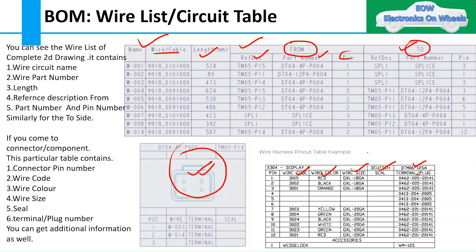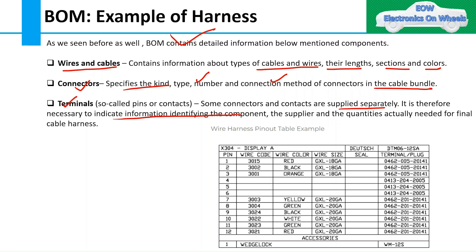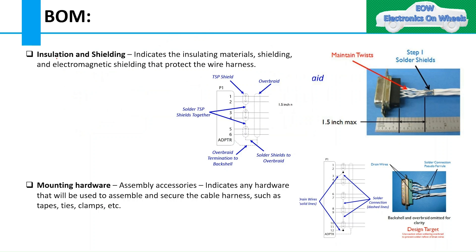For better understanding, the components of bill of material can be described as follows. Wires and cables contain information about types of cables and wires, their lengths, sections, and colors. Connectors specifies the kind, type, number, and connection method of connectors in the cable bundle. Terminals — so-called pins or contacts — where some connectors and contacts are supplied separately, it is therefore necessary to indicate information identifying the component, the supplier, and the quantities actually needed for the final cable harness. Insulation and shielding indicates the insulating materials, shielding, and electromagnetic shielding that protect the wire harness.